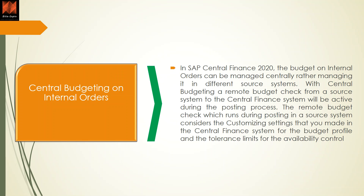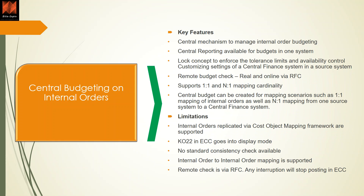Let's talk about central budgeting in SIFIN 2020. Budgeting on internal orders can now be centralized — that's the term called central budgeting. Rather than maintaining budgets on internal orders in different source systems, you can simply replicate your internal orders into the target system and maintain the budget at the central level. You continue your transactions in the ECC system, but when you do transactions on those internal orders budgeted in the central system, the system will do a remote budget check via RFC connections to ensure the budget is checked first before the transaction is allowed.